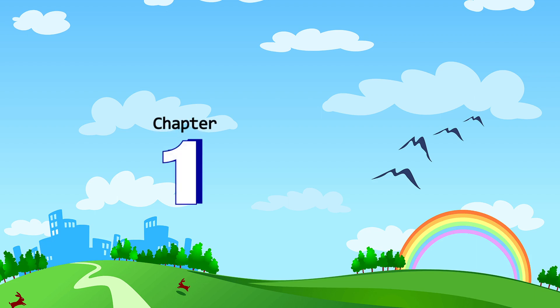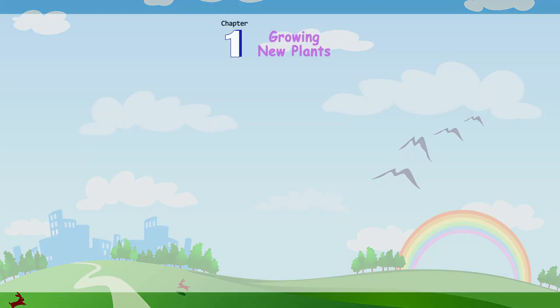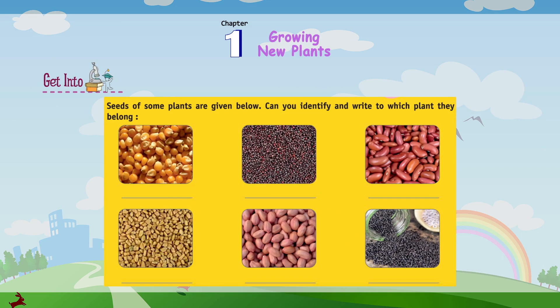Chapter 1: Growing New Plants. Seeds of some plants are given below. Can you identify and write to which plant they belong?